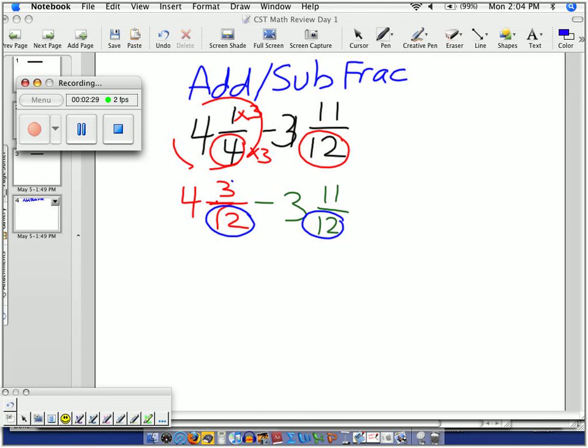Can I do 3 minus 11? No. So what I'll do is I'll borrow from the 4. I'll take 1 away from the 4, leaving 3. If I take 1 away, I'm going to change this 1 so that I can make this 3 twelves larger. I'm going to rename this 1 as 12 over 12.